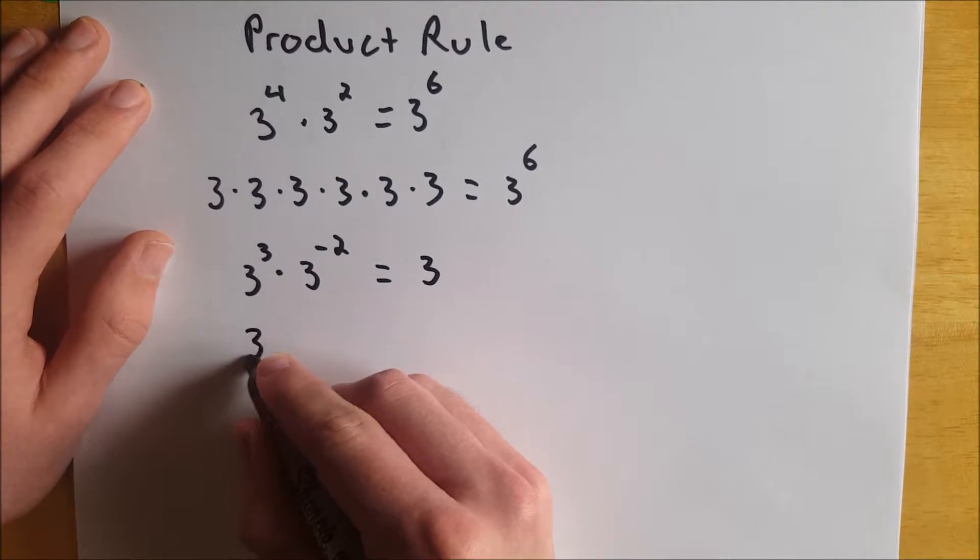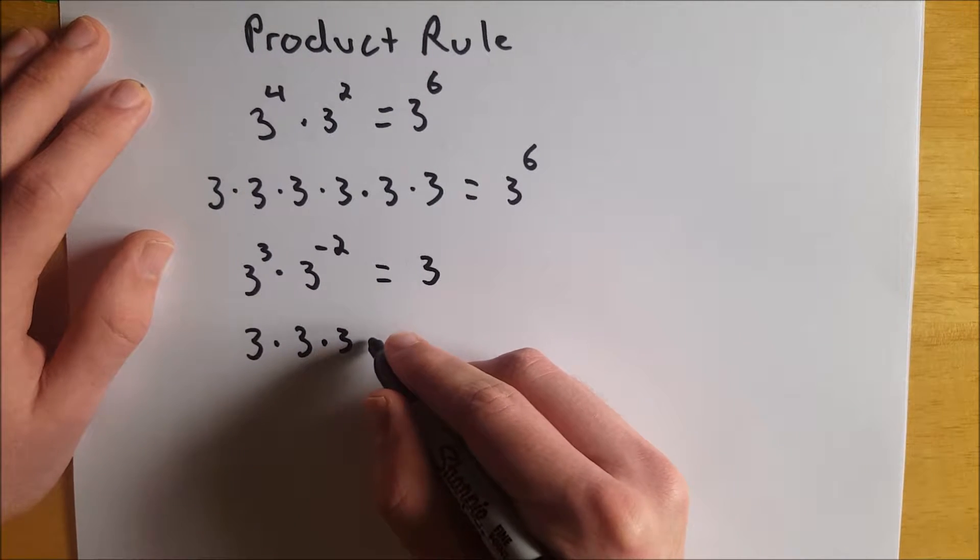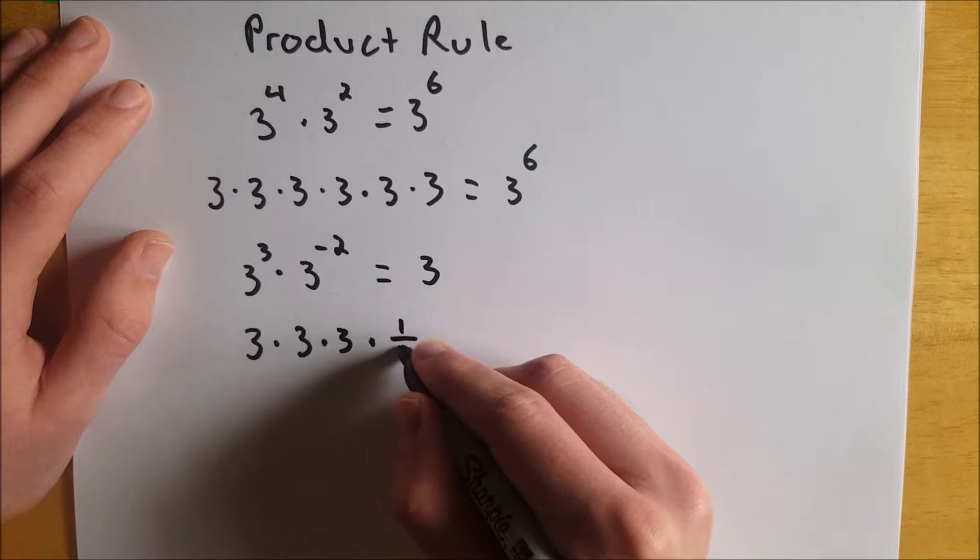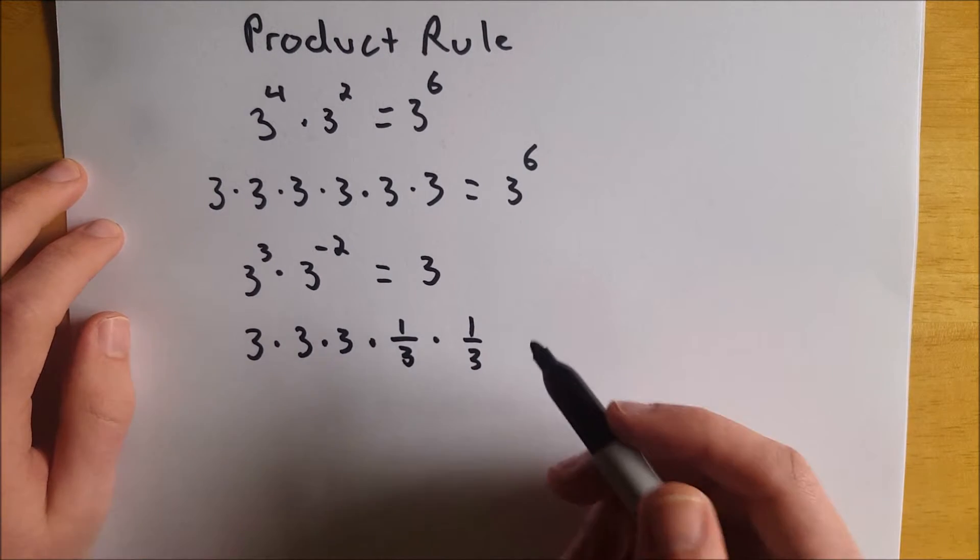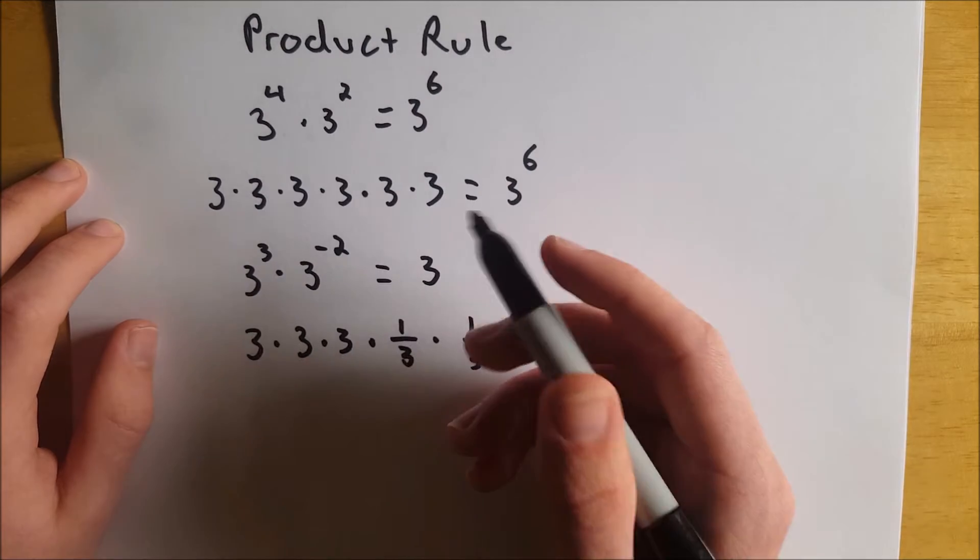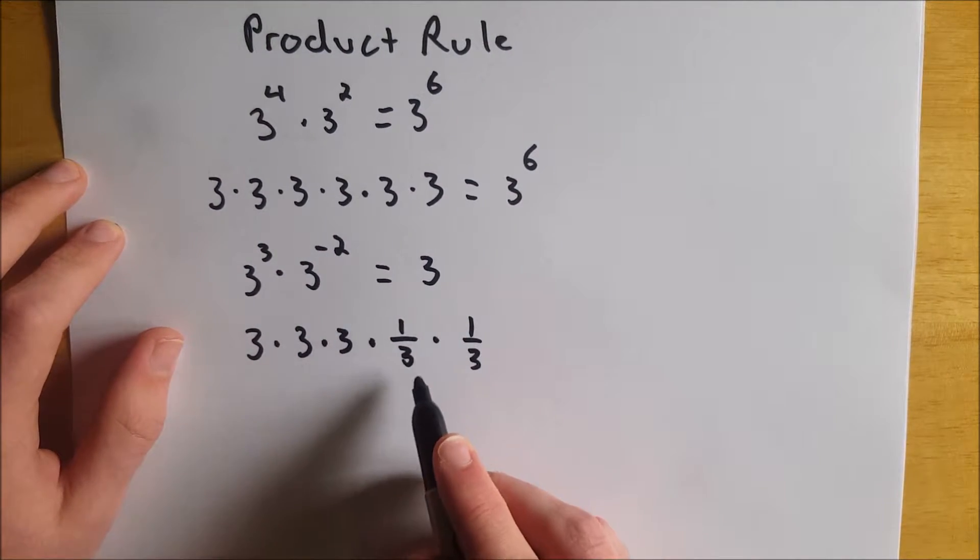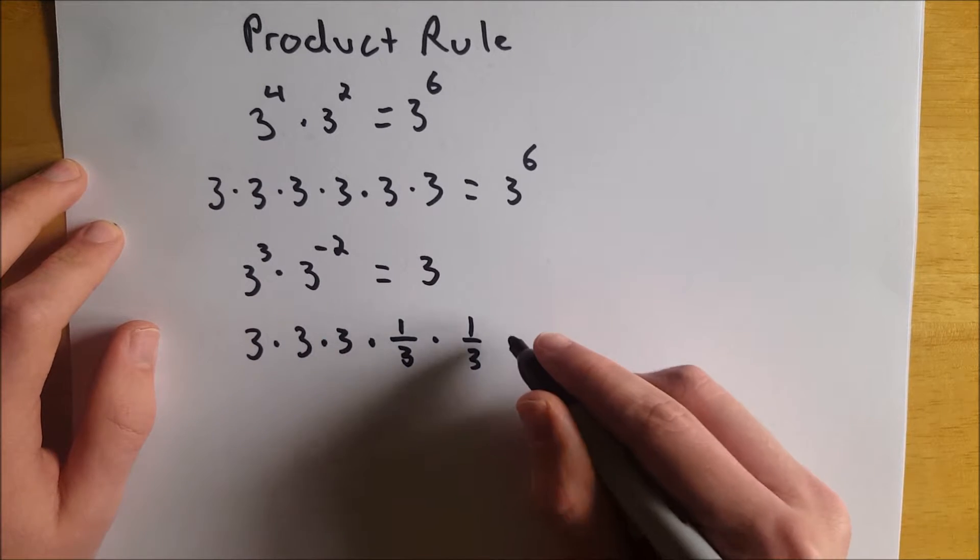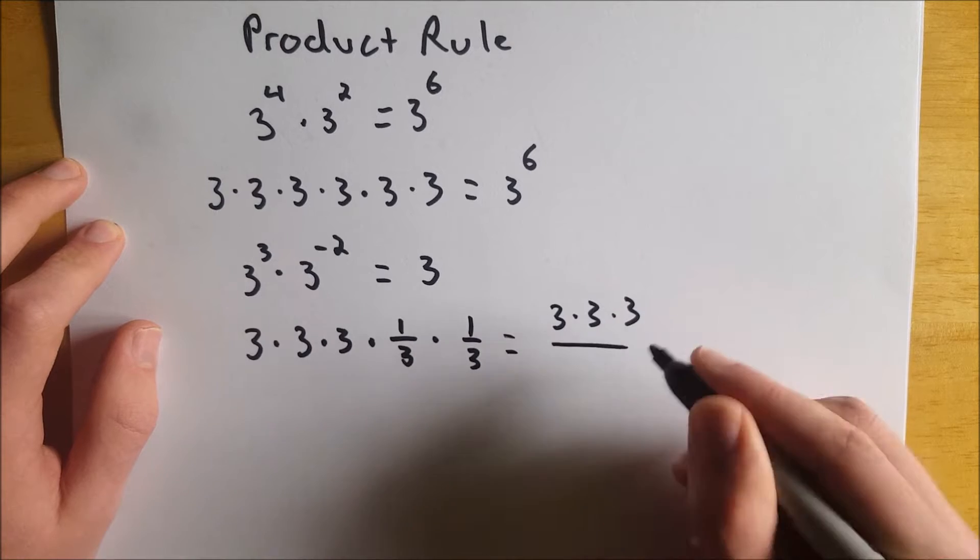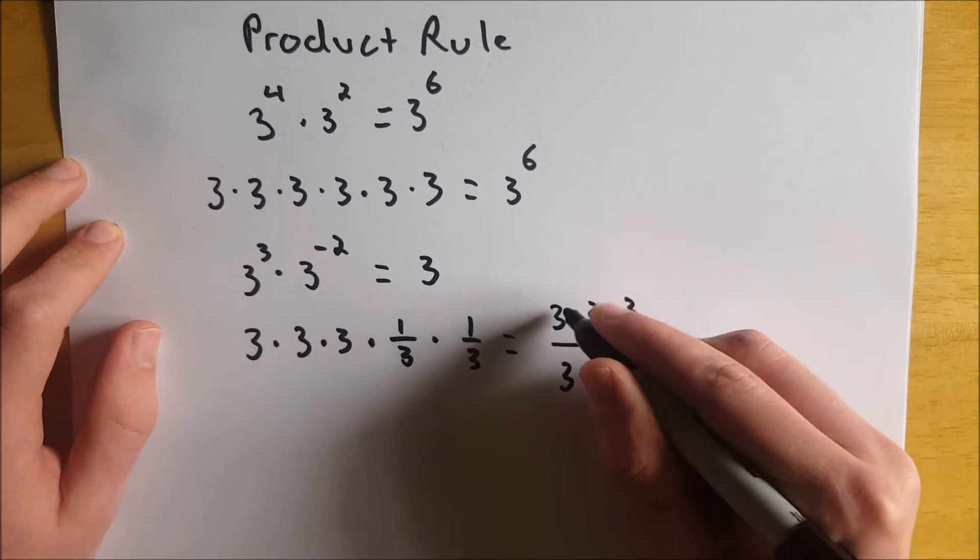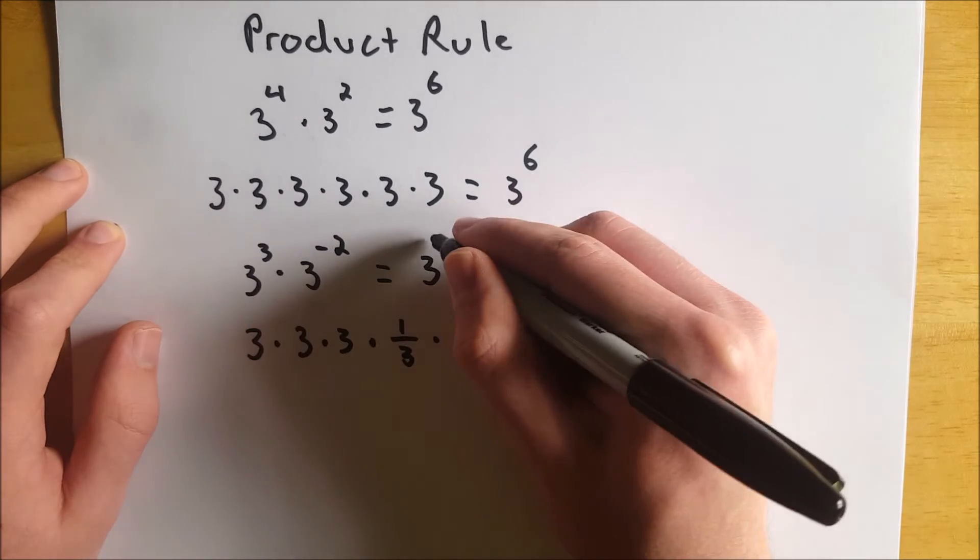Well if we write it out, we get 3 multiplied by 3 multiplied by 3, and this gets multiplied by 1/3 multiplied by 1/3. Because the negative exponent rule tells us that 3 to the negative 2nd is the same as 1 over 3 squared, which is 1 over 3 multiplied by 1 over 3. Now this is equal to 3 times 3 times 3 divided by 3 times 3. You see we get two pairs of 3's that cancel out, and we are left with 3,